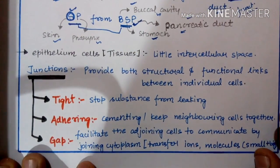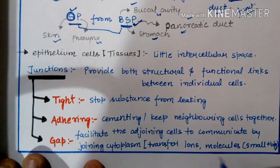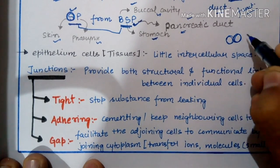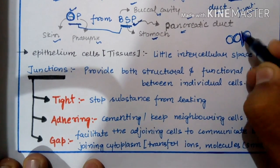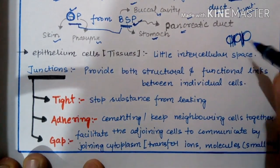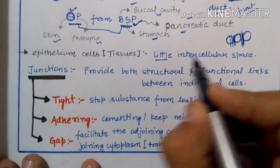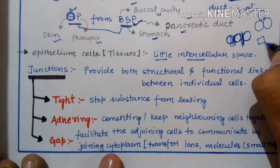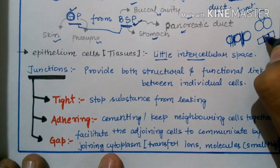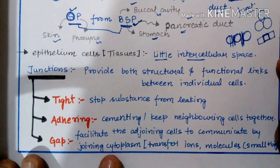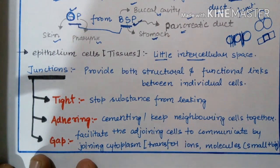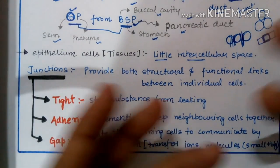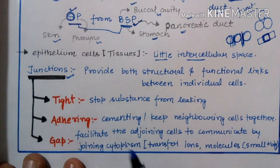Now we will discuss different kinds of junctions. Tissues are formed from the aggregation of different kinds of cells, and these cells are joined to each other via junctions. Epithelial cells have very little intercellular space because they are densely packed — like pavement epithelium, similar to floor tiles. Because they have very little intercellular space, they are more strongly connected to each other.